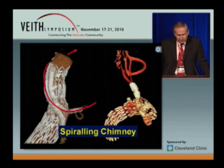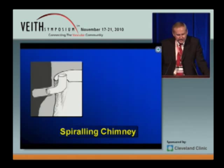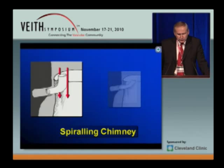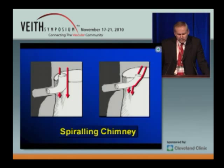Here is an example from the aortic arch. The advantage of the spiraling chimney, apart from extending the sealing zone, is that it converts those vertical gutters into more oblique gutters that perhaps prevent endoleakage in a better way.